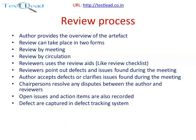During the review process, the author provides an overview of the artifact. The review can take place in two forms: review by meeting and review by circulation. Reviewers use review aids like the review checklist and point out defects and issues found during the meeting. The author accepts defects or clarifies issues found. The chairperson resolves any disputes between the author and reviewers. Open issues and action items are recorded, and defects are captured in the defect tracking system.